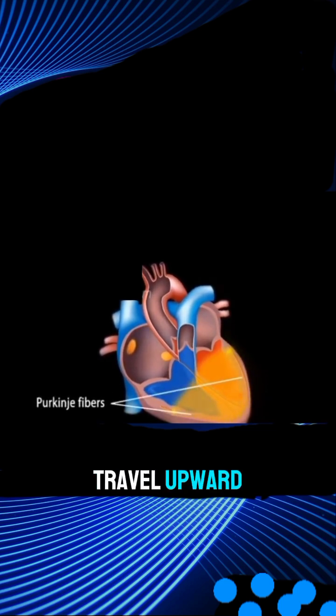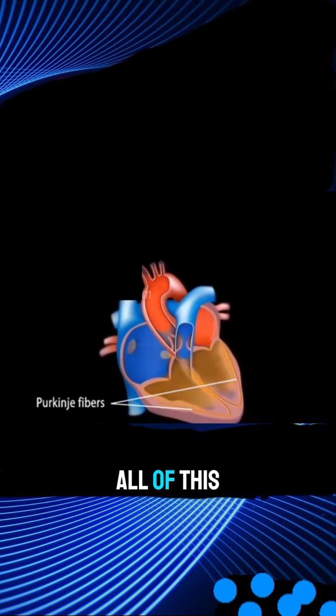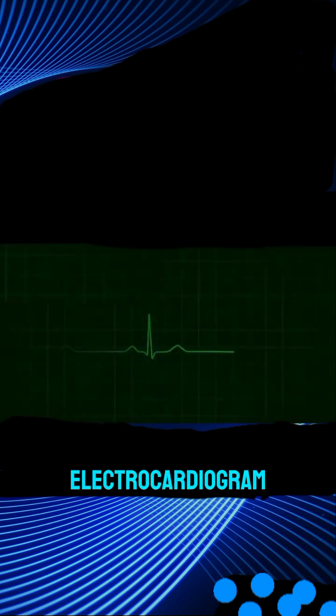The Purkinje fibers travel upward and excite all of the ventricular muscles almost simultaneously. All of this cardiac activity can be recorded on an electrocardiogram.